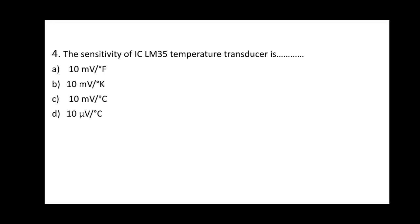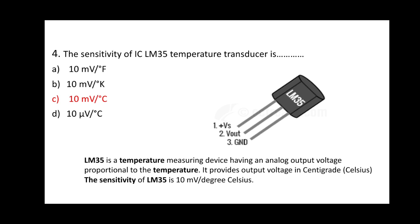Question 4: The sensitivity of IC LM35 temperature transducer is? Options: A) 10 mV per Fahrenheit, B) 10 mV per Kelvin, C) 10 mV per degree Celsius, D) 10 mV per degree Celsius. The correct option is C. The LM35 is a temperature measuring device with an analog output voltage proportional to temperature. It provides output in centigrade Celsius, with a sensitivity of 10 mV per degree Celsius.